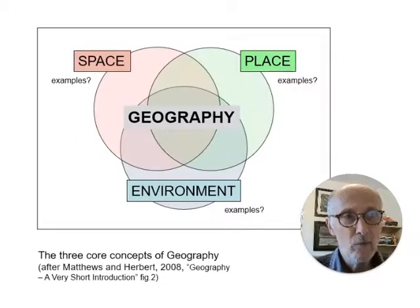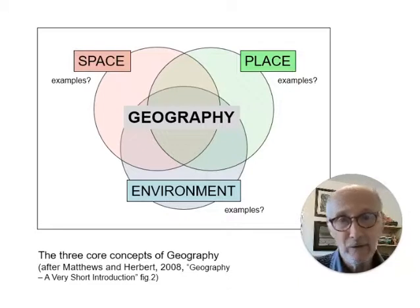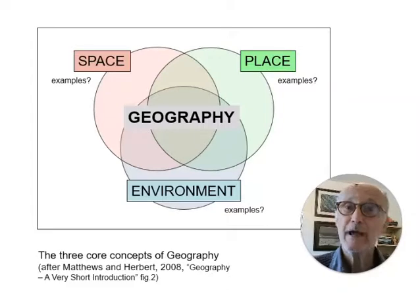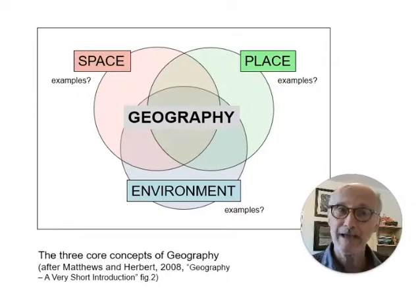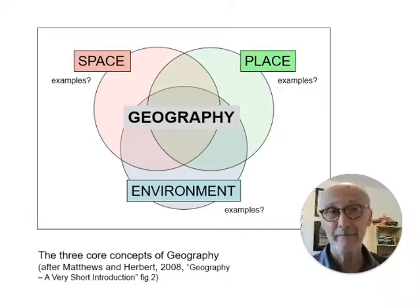This is a very common way of representing what geography is all about. People say it's about space, place, and environment. In your reading for this week, I want you to explore what people mean by those terms — space, place, and environment — and come up with specific examples that would fit in each of those circles. Is space just the area within which we do everything? Are places specific locations within that space? And is the environment the overall setting within which all of that happens?